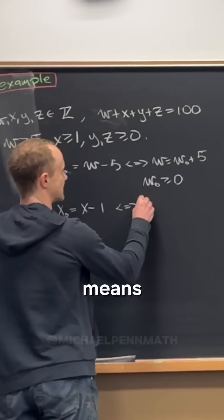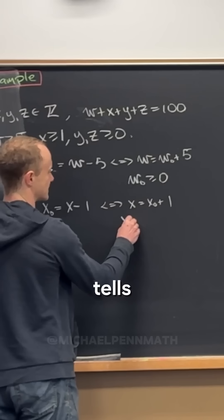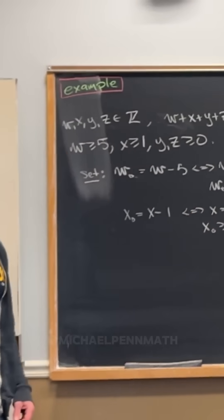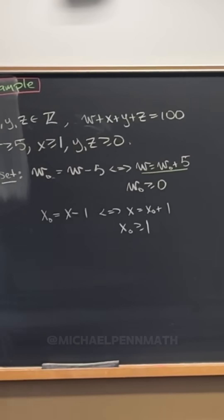minus 1, which means that x is equal to x naught plus 1, which tells us that x naught is also bigger than or equal to 0.